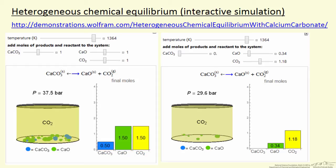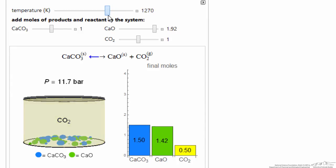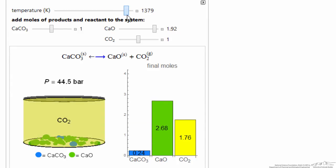So let's go and look at the actual simulation on the Wolfram site. So here's the simulation. You can see, as I change the temperature, the pressure of carbon dioxide goes down. To the right, the gas phase in the constant volume container gets more intense as the pressure increases.